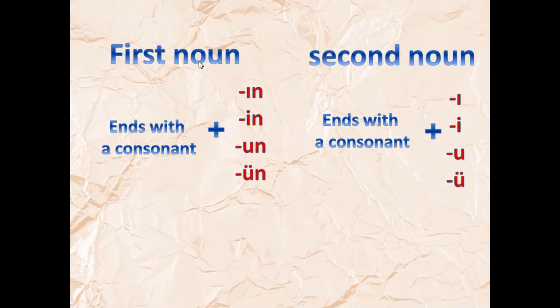Let's check out our first example. We have 'adamın evi', which means 'the man's house'. Adam is 'the man'. As you see in the formula, please take note of it so you will decode what's going on in the examples. If you take notes of these on a paper in front of you, you will understand it better.